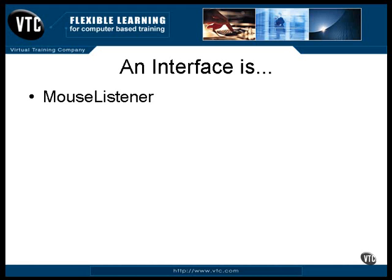MouseListener defines some methods that can be called with information about the position of the mouse. There is one method called when the mouse enters a window, another when it leaves, another when a mouse button is clicked, one when the mouse button is pressed, and another when a mouse button is released. Any class can implement this MouseListener interface and be signed up to receive mouse notification events. All the class has to do is provide bodies for the methods. What actually happens when one of these methods is called is the private business of the class that implements the interface. But because the interface is implemented, all the methods are there and can be called.